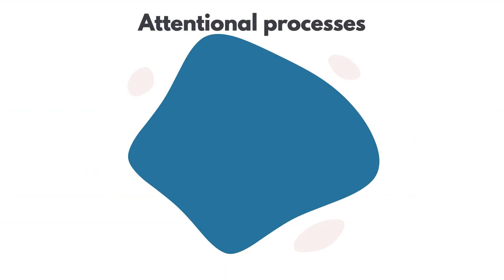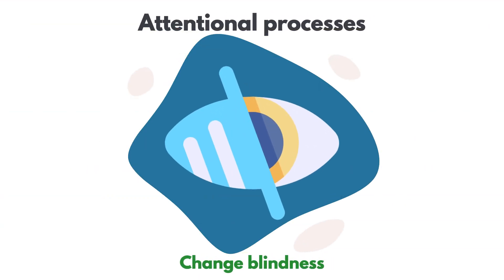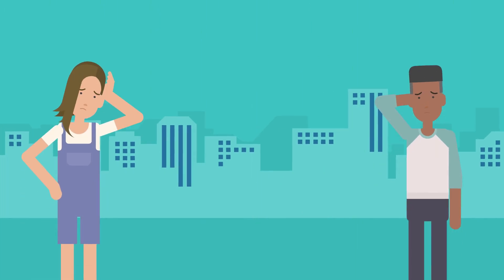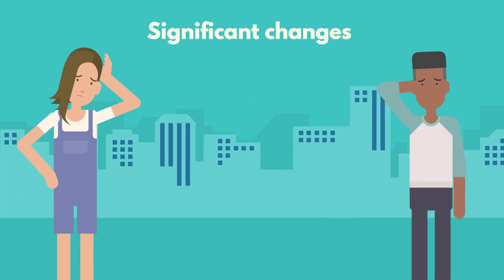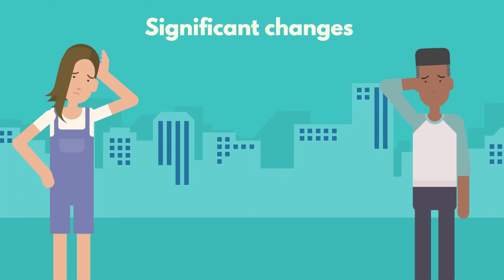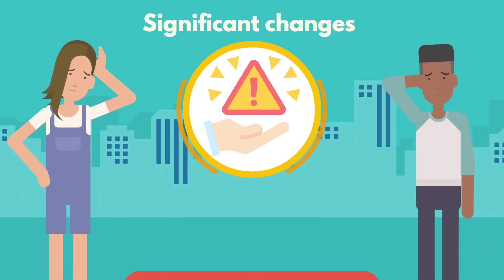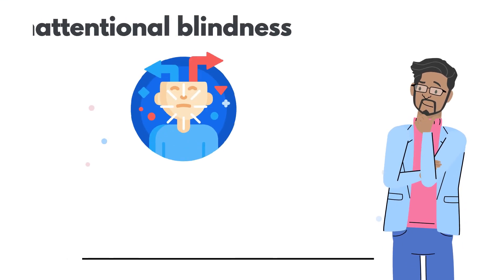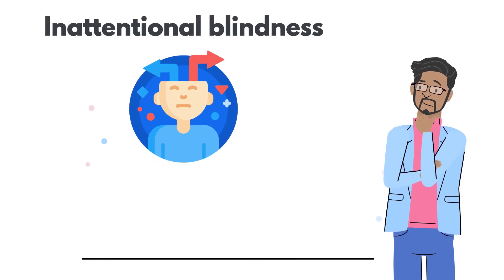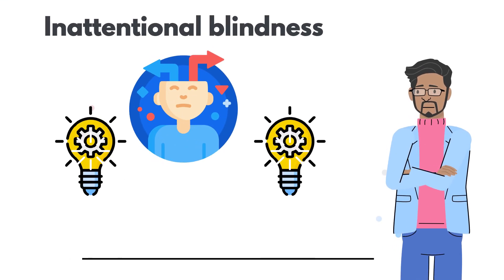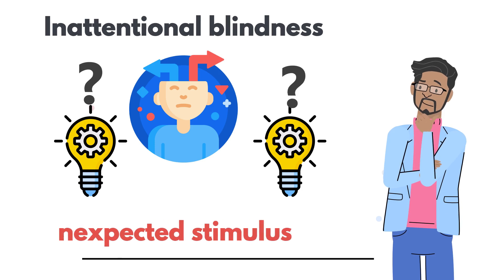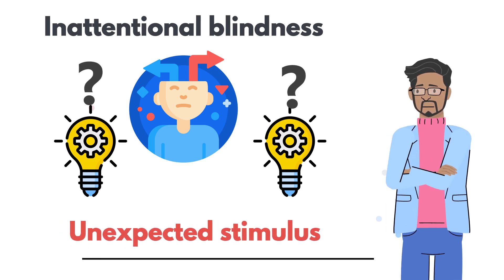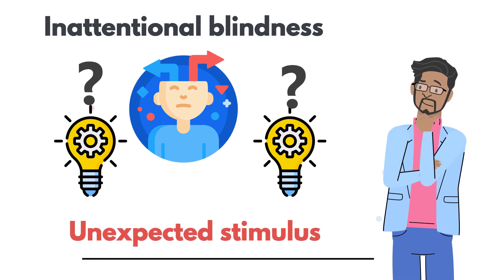Attentional processes also include phenomena like change blindness, where people fail to notice significant changes in their environment due to limitations in attention. Similarly, inattentional blindness occurs when a person fails to notice an unexpected stimulus in plain sight because their attention is elsewhere.